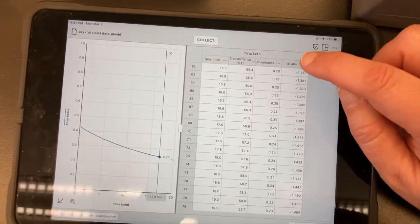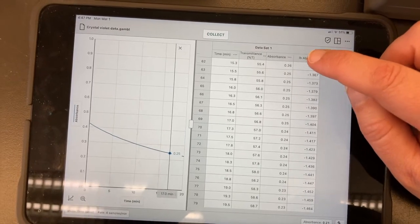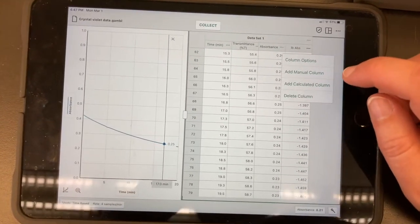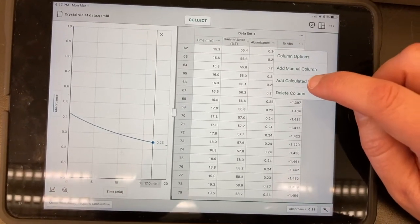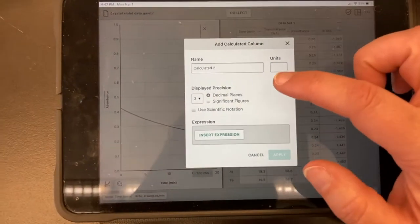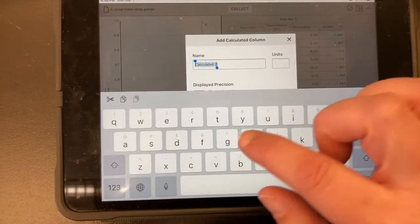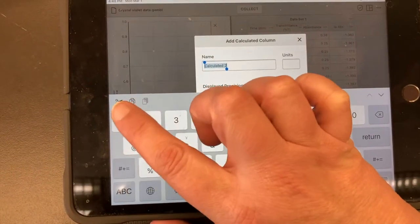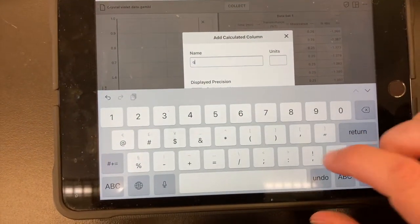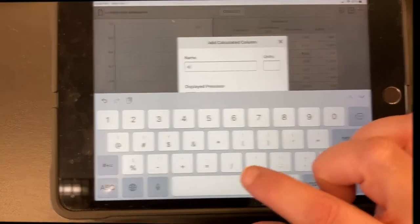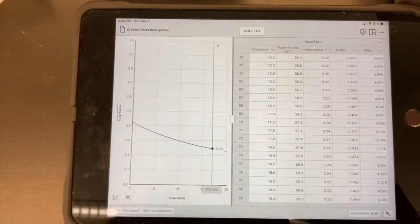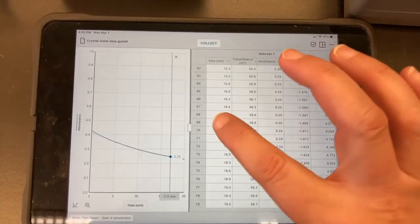And then our second order test is one over the concentration. So we are going to do one over the absorbance. So again, we are going to add a calculated column. And we are going to change the name of that. So you can call it one over absorbance or you can call it inverse absorbance. All right. So now we are going to look at the graph.